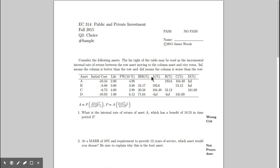This right here is supposed to be the incremental internal rates of return between a couple of different assets. It's described up here as the incremental rate of return between the row asset moving to the column asset.